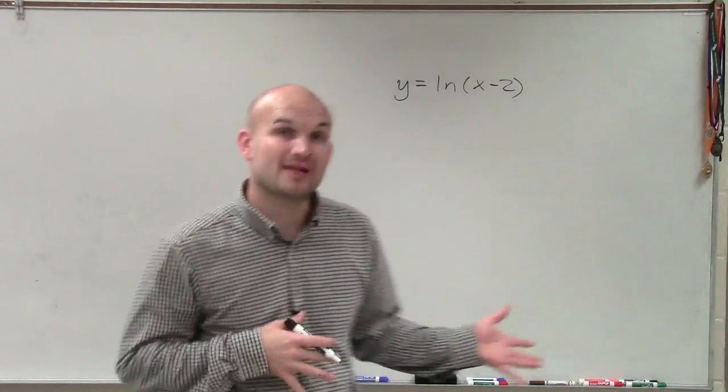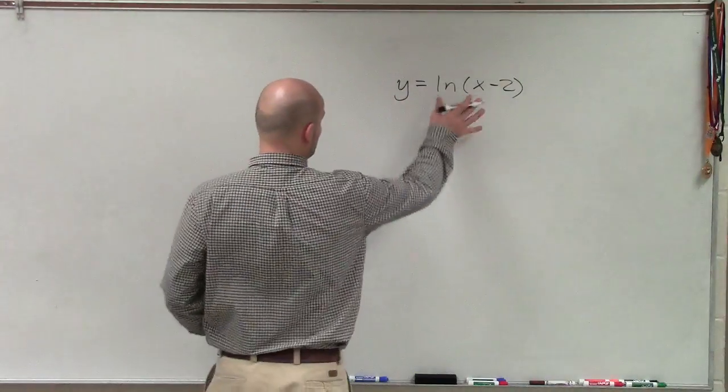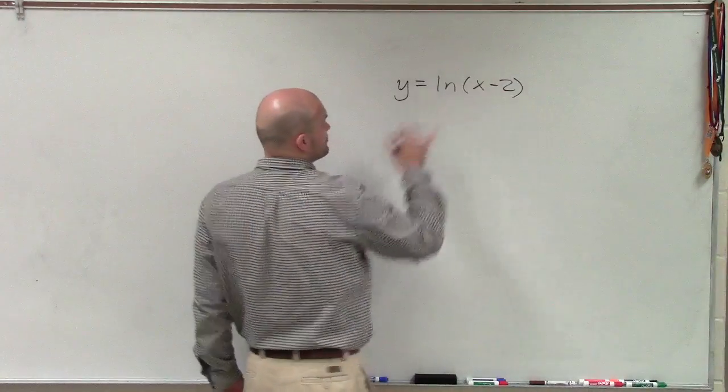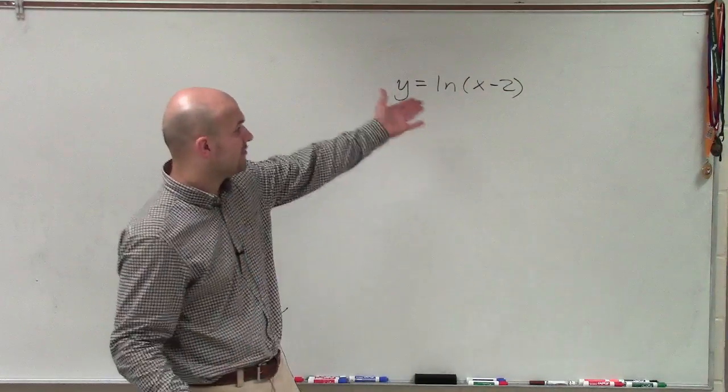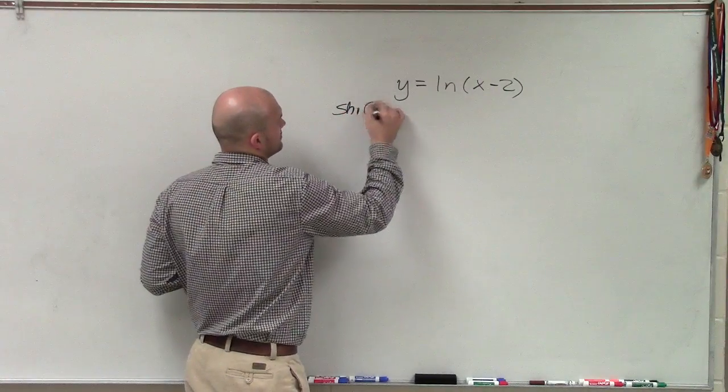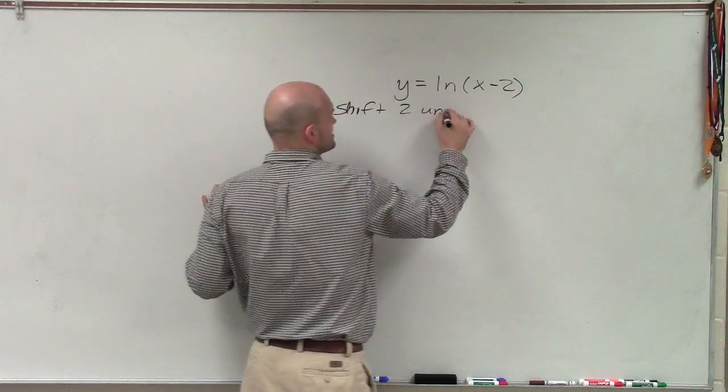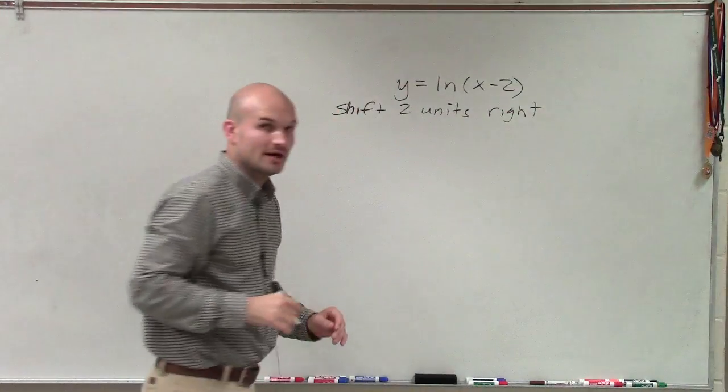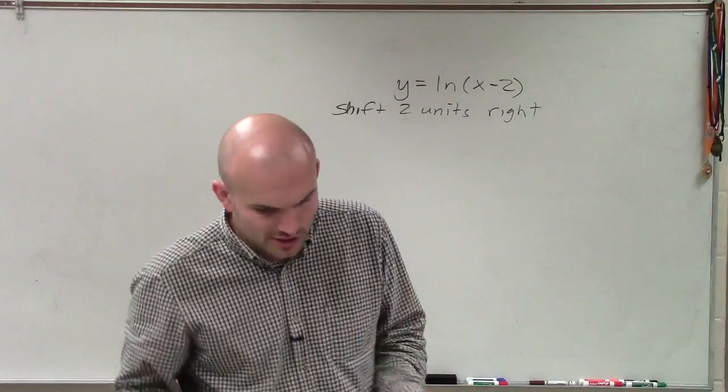So I'd like to show you how to graph this. And what we're going to do is apply some transformations. So the first thing I like to do is first determine exactly what our transformation is. And since we're subtracting the 2 inside of our function, we're going to shift the graph 2 units to the right.